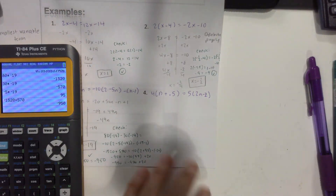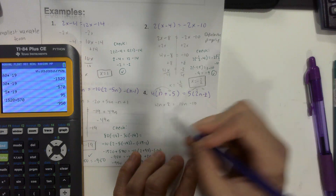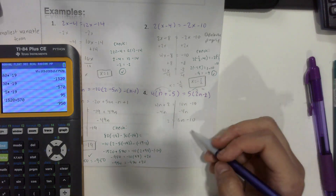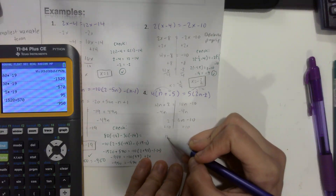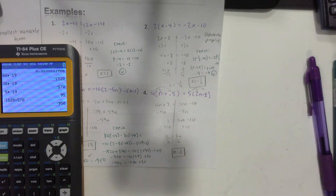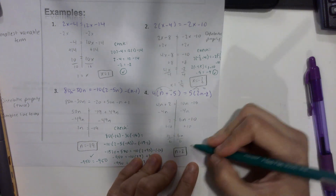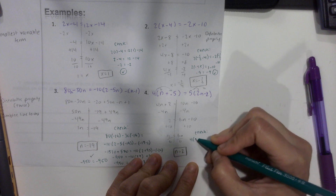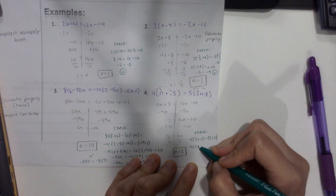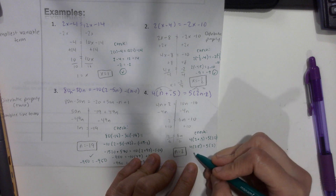For example 4, we apply the distributive property to get 4n plus 2 equals 10n minus 10. Subtract 4n from both sides (since it's smaller): 2 equals 6n minus 10. Add 10 to both sides: 12 equals 6n. Divide by 6: n equals 2. This one had distributing on both sides but was still easy to follow. Check: 4 times 2.5 equals 5 times 2 times 2 minus 2, giving 10 equals 10.